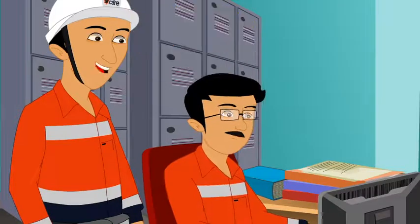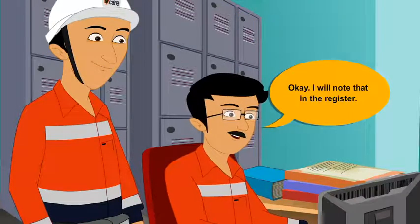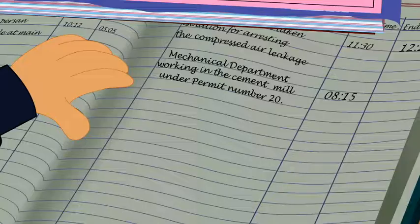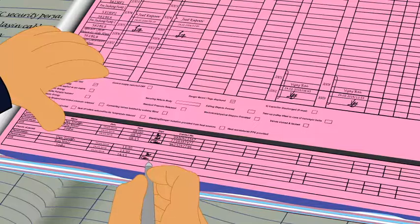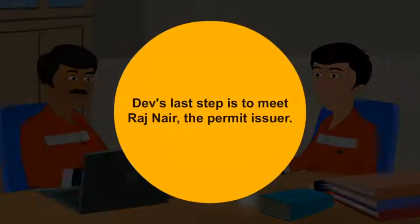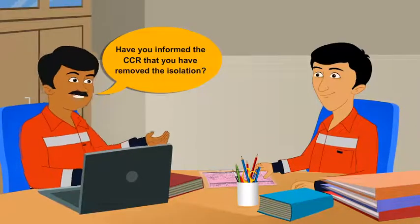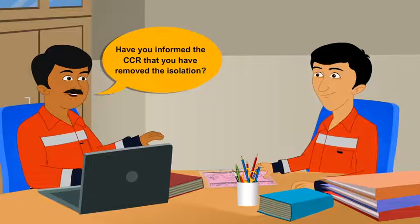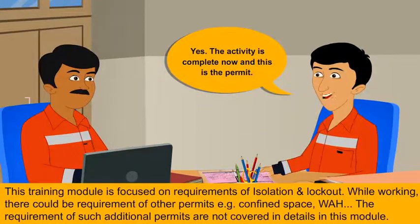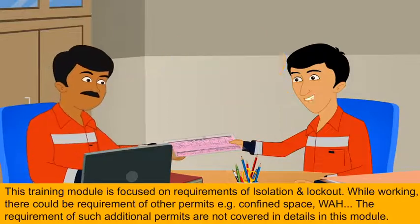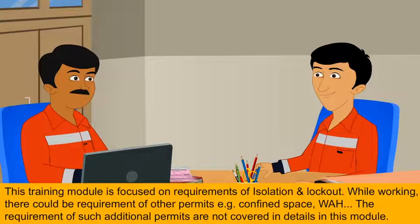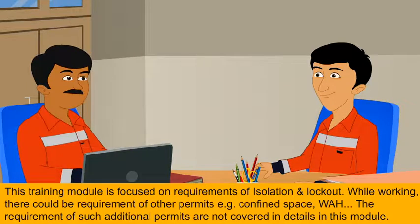Dev informs the CCR that the permit has been closed. The CCR personnel notes it in the register and signs on the permit. Dev confirms to the permit issuer that the CCR has been informed that the isolation has been removed and the activity is complete. Rajnir keeps the permit to maintain a record of plant activities. This brings the multiple isolation process to its end.